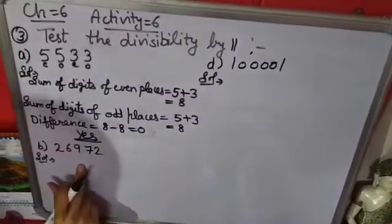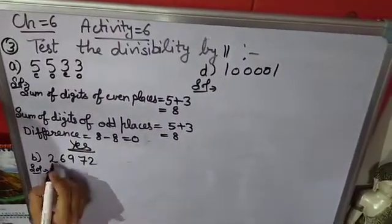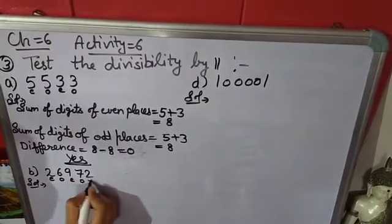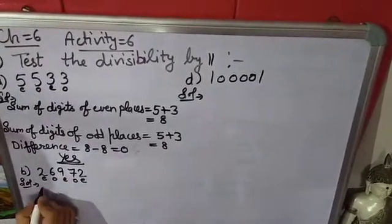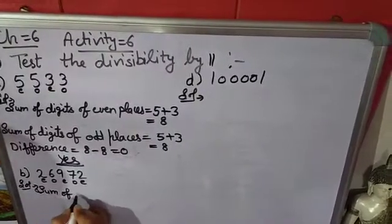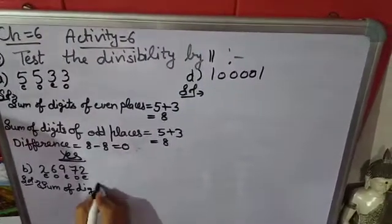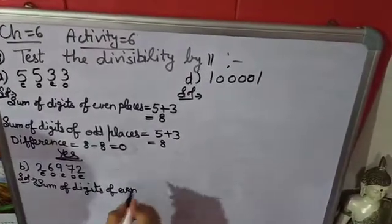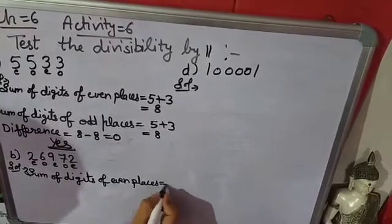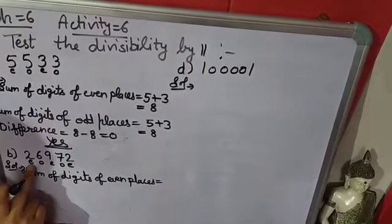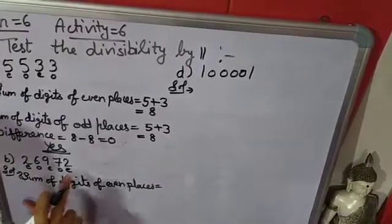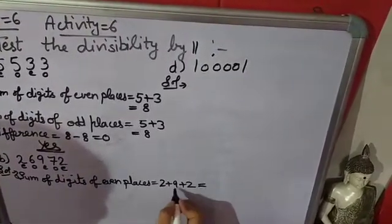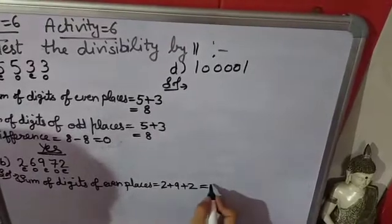Now look at the B part. Again we label the digit positions as even, odd, even, odd, even, odd serially. The sum of digits at even places: the digits are 2, 9, and 2, so 2 plus 9 plus 2 equals 13.